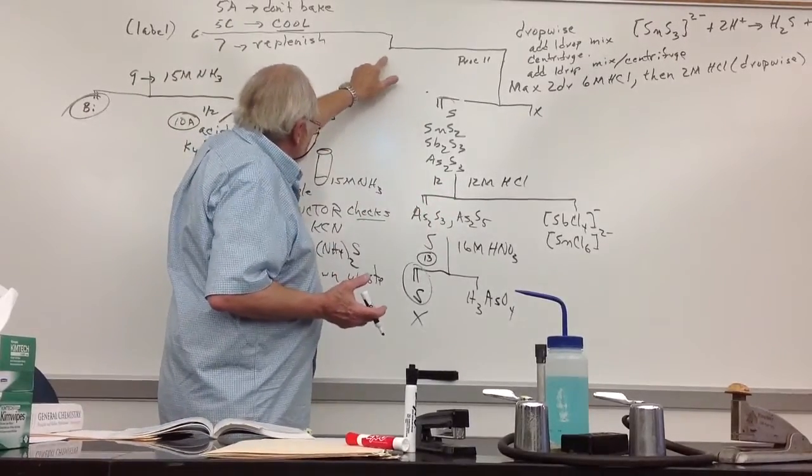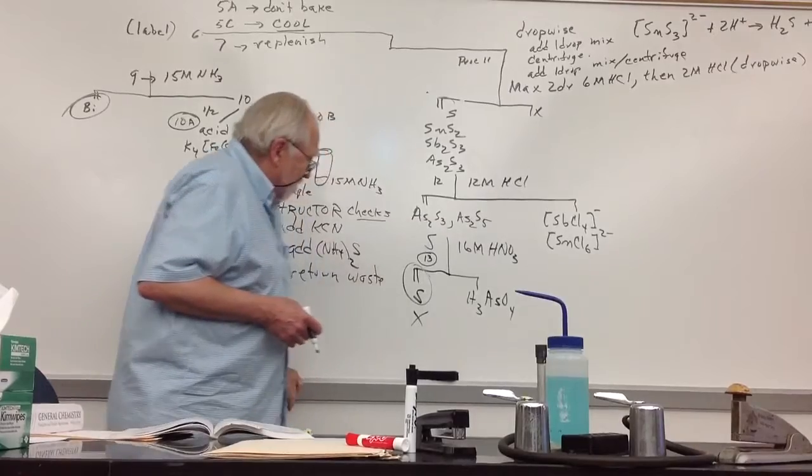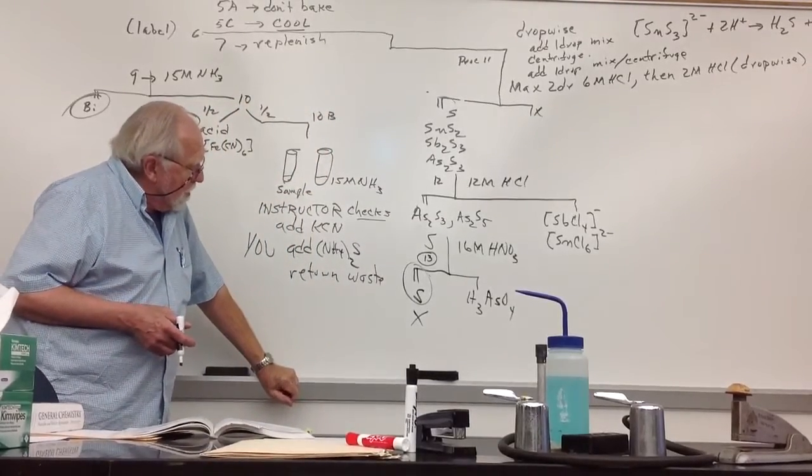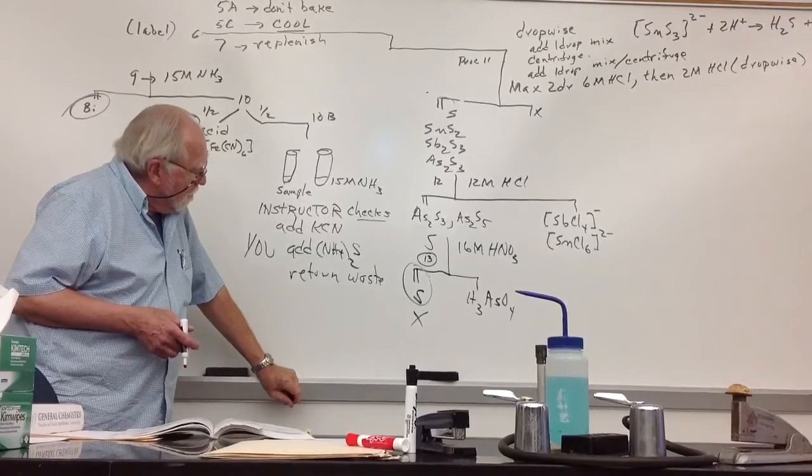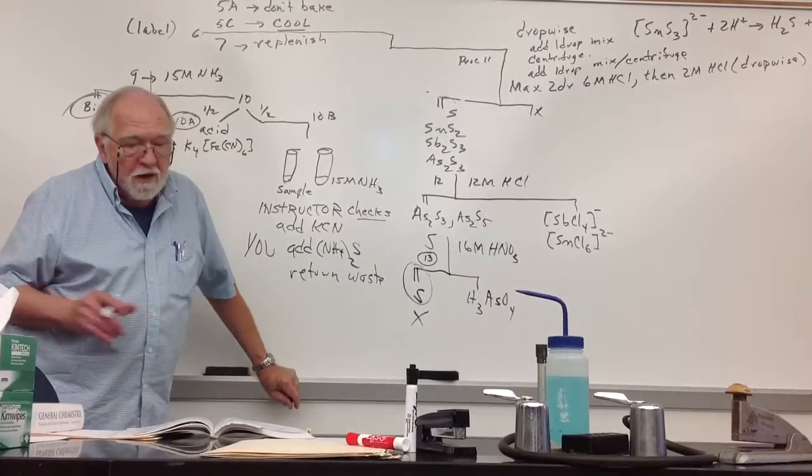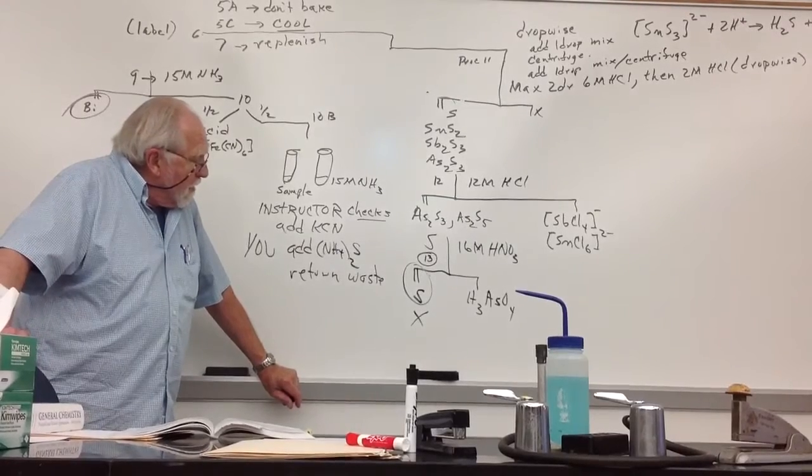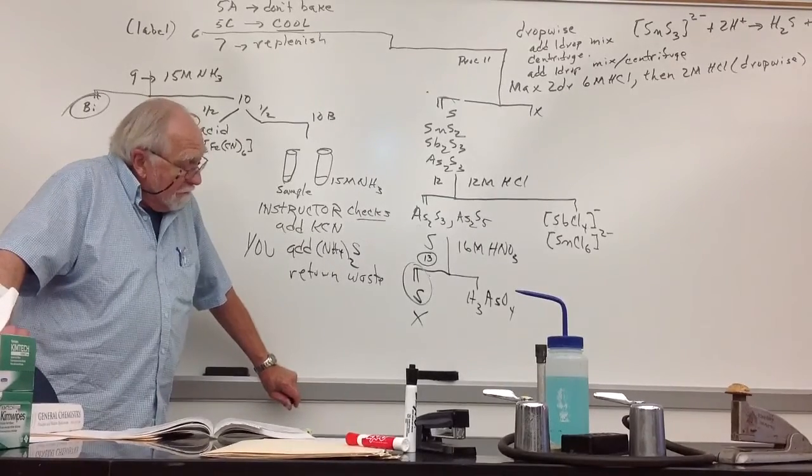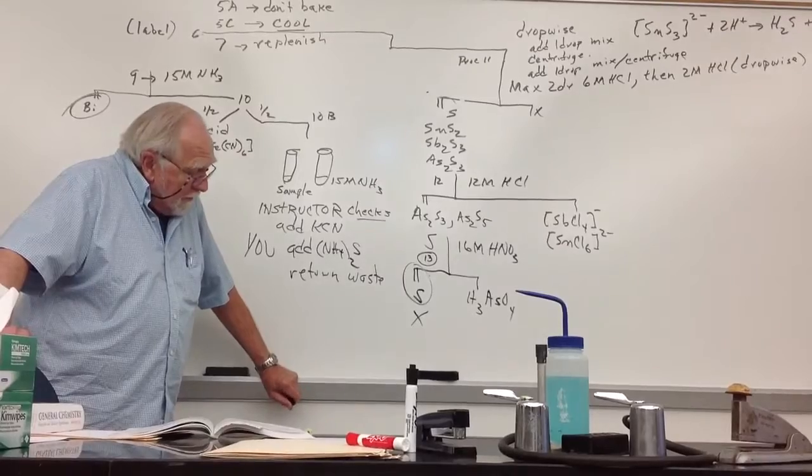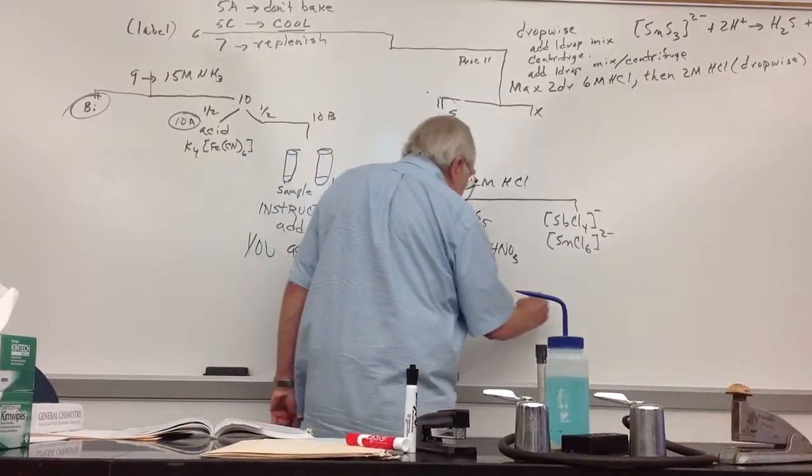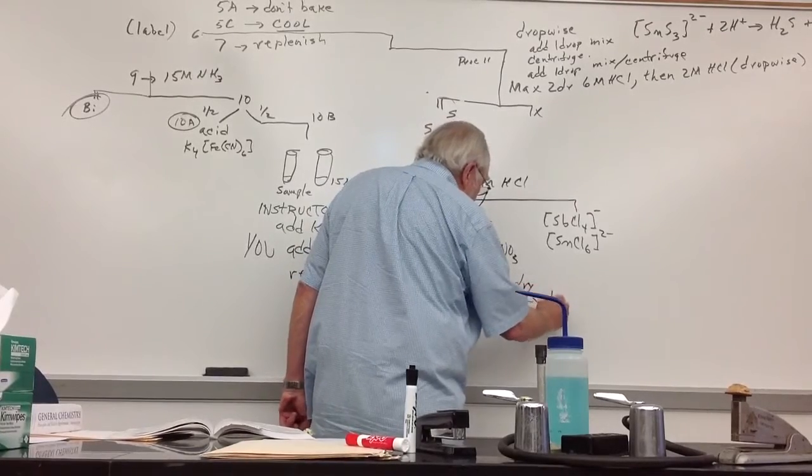Except, way back here in procedure 6, you definitely wanted to label it and save it. Save it because now we're getting back to it. The rest of the arsenic test, once you've gotten rid of the sulfur here, it says you want to evaporate to dryness. Don't fake. And you're going to convert it to arsenic-5 oxide. Dry, don't fake.